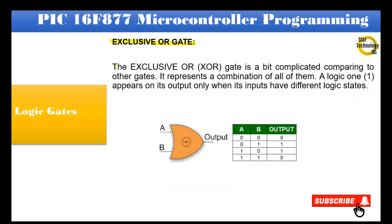Exclusive OR (XOR) gate: The XOR gate is a bit more complicated compared to other gates, as it represents a combination of all of them. A logic 1 appears on its output only when its inputs have different logic states. Truth table: If both inputs A and B are logic 0, output is 0. If A=0 and B=1, output is 1. If A=1 and B=0, output is 1. If both A and B are logic 1, output is logic 0.